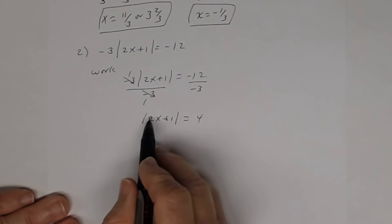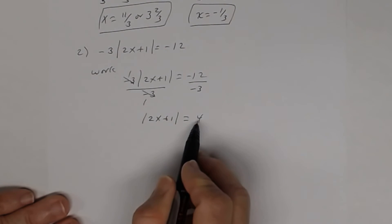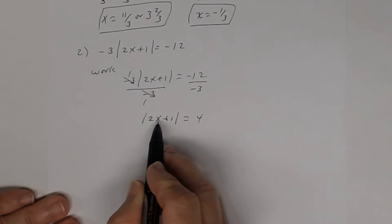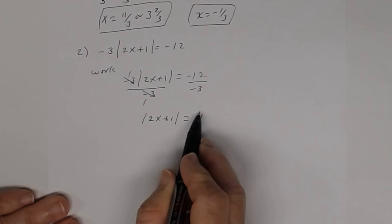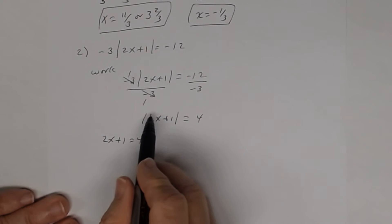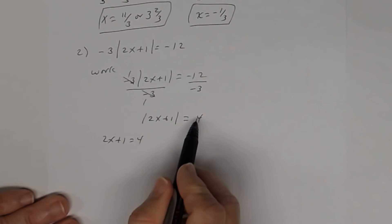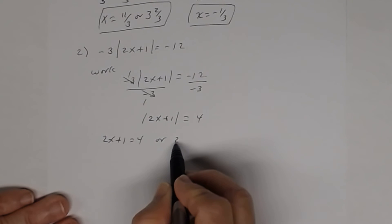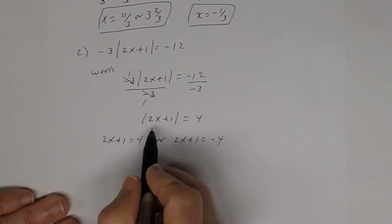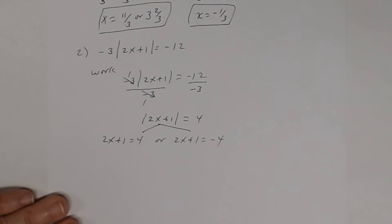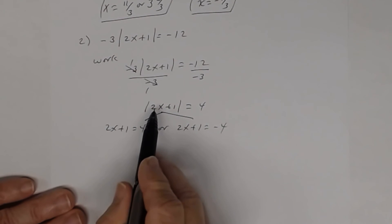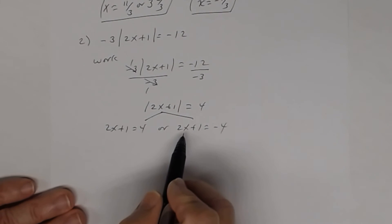You have the absolute value of 2x plus 1 equals 4. In order for both sides to be equal, if 2x plus 1 is positive, then 2x plus 1 must equal 4. If it's negative, then 2x plus 1 equals negative 4. So you rewrite this as two separate equations: 2x plus 1 equals 4, and 2x plus 1 equals negative 4.